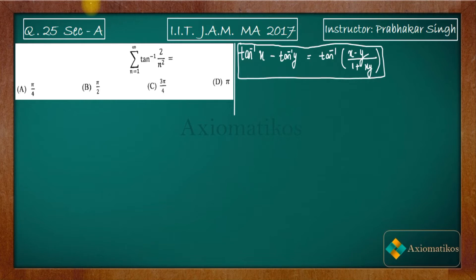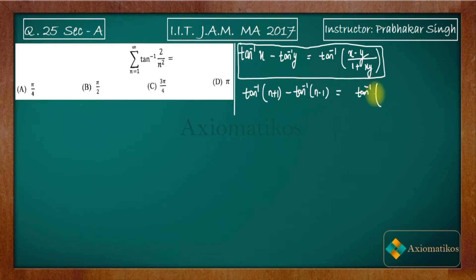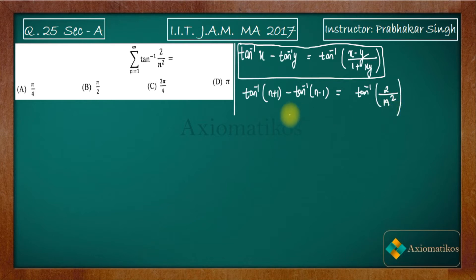If I write tan⁻¹(n+1) - tan⁻¹(n-1), what will happen? You will get tan⁻¹ of (n+1 - (n-1)) in the numerator, which gives 2. On the denominator, if you multiply (n+1)(n-1), you will get n² - 1. Wait, more precisely you get tan⁻¹(2/(1+n²-1)) = tan⁻¹(2/n²). So tan⁻¹(n+1) - tan⁻¹(n-1) = tan⁻¹(2/n²).